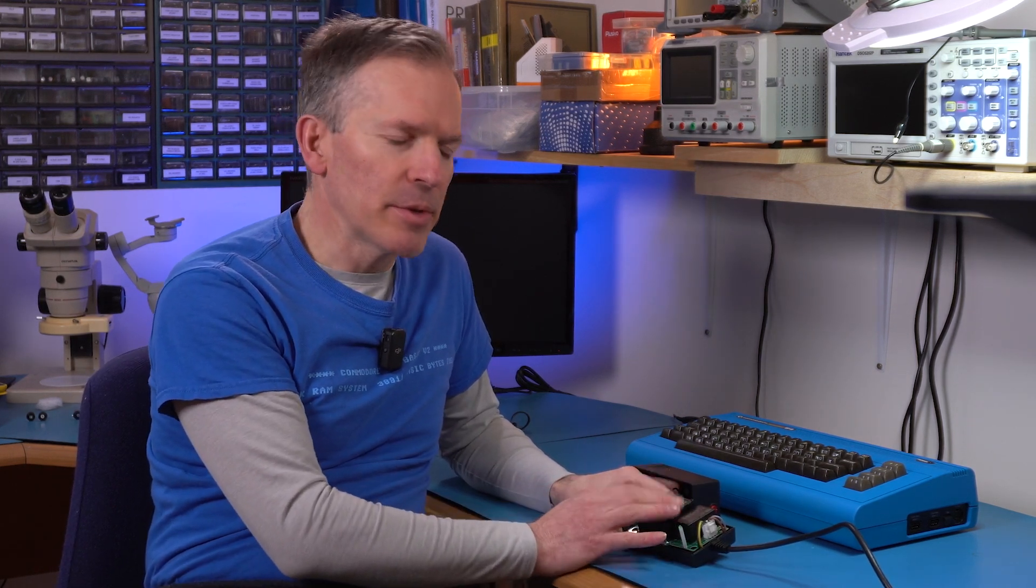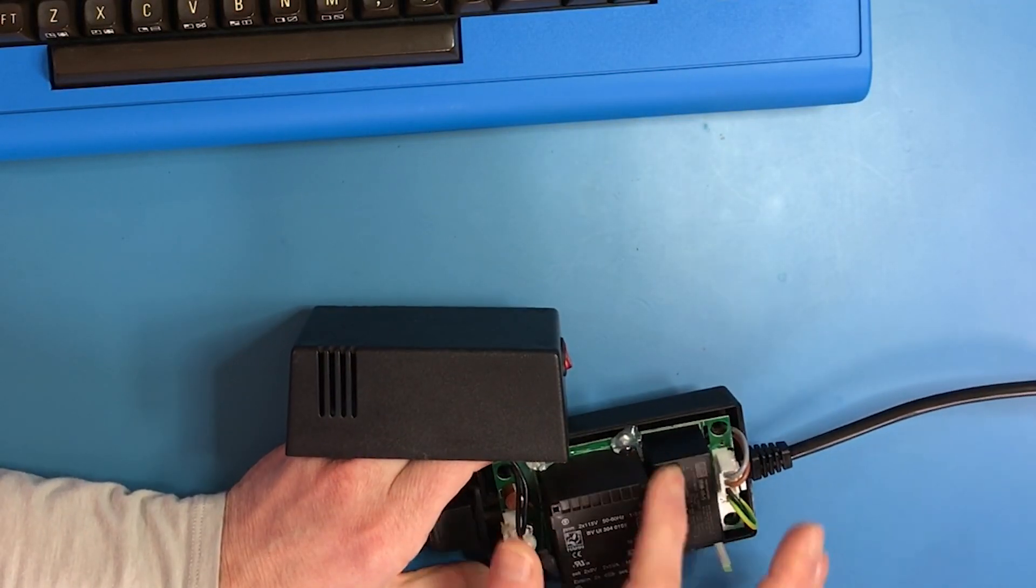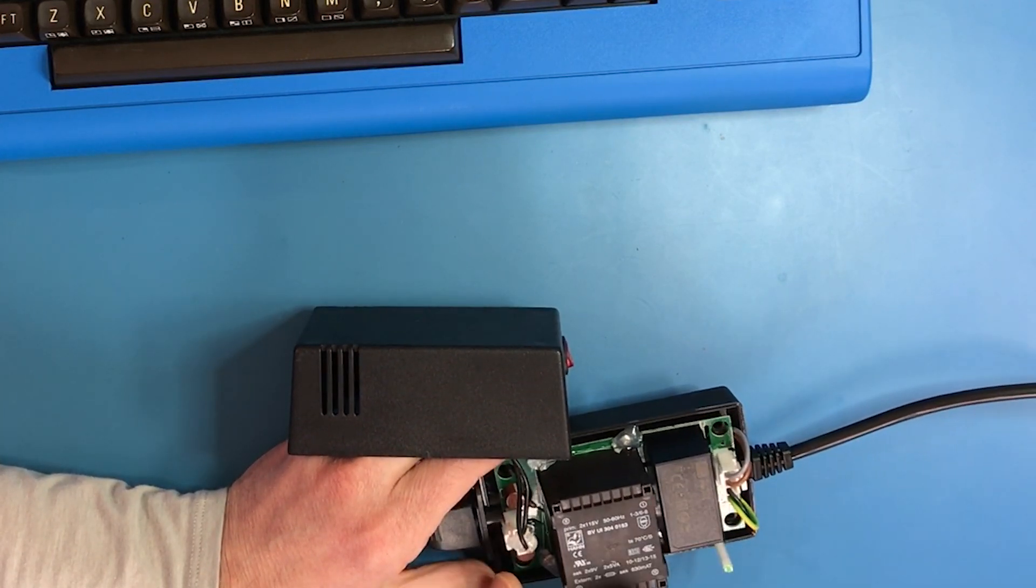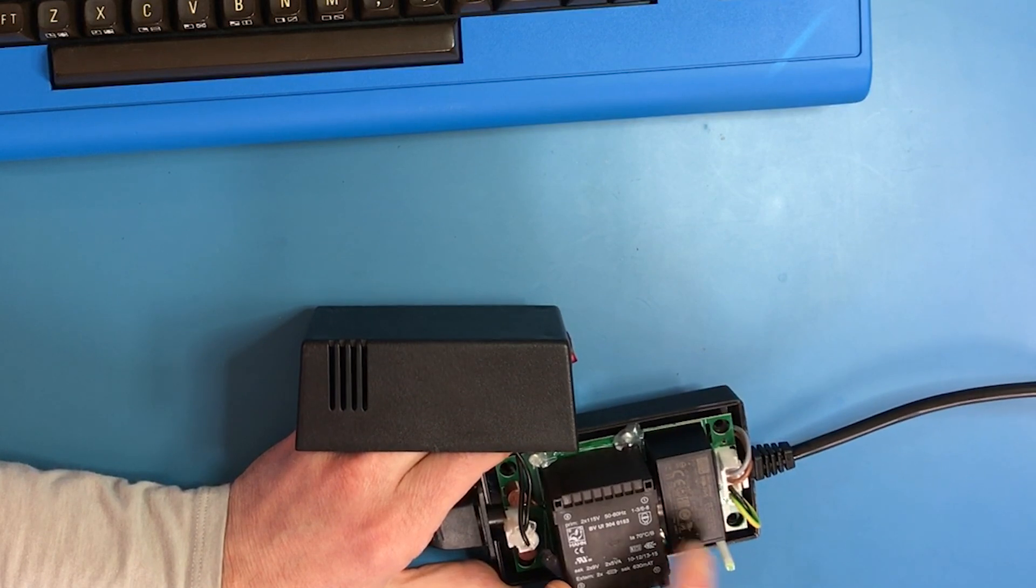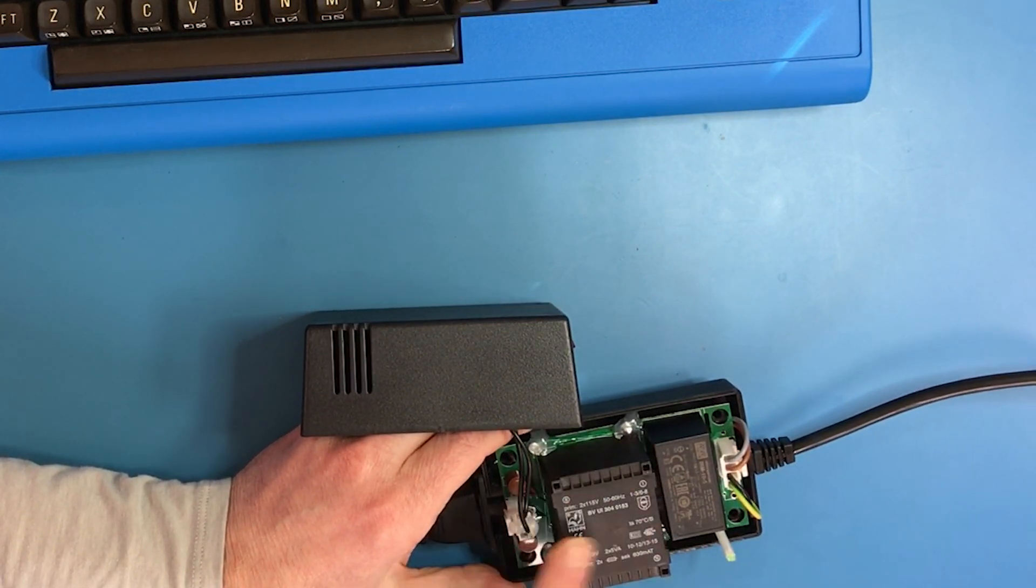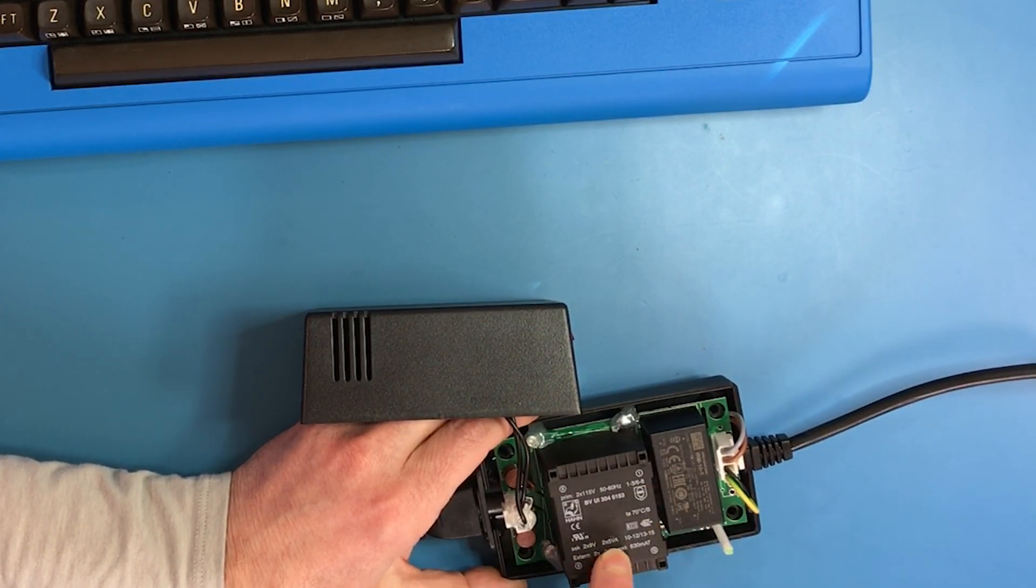If we look at this power supply there's two parts to it, two main parts, and this over here is a Meanwell IRM105. This outputs 5 volts DC at 2 amps, and this one is still a little confusing to me.